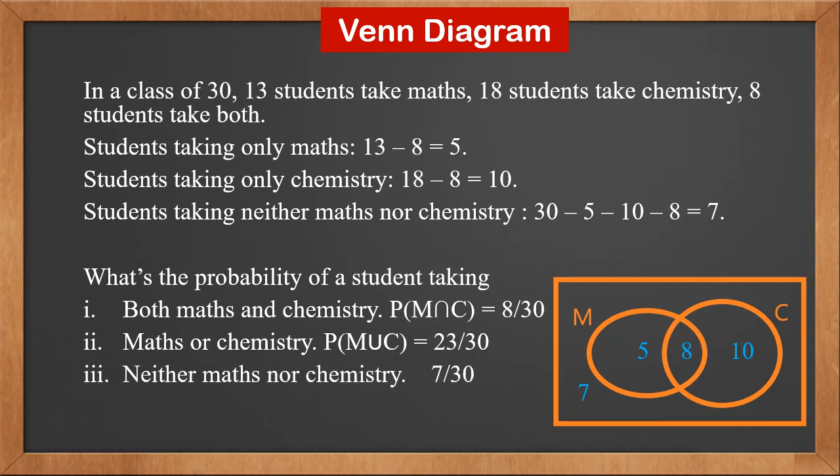Neither maths nor chemistry. It's the area outside M and C. So the probability is 7 over 30.